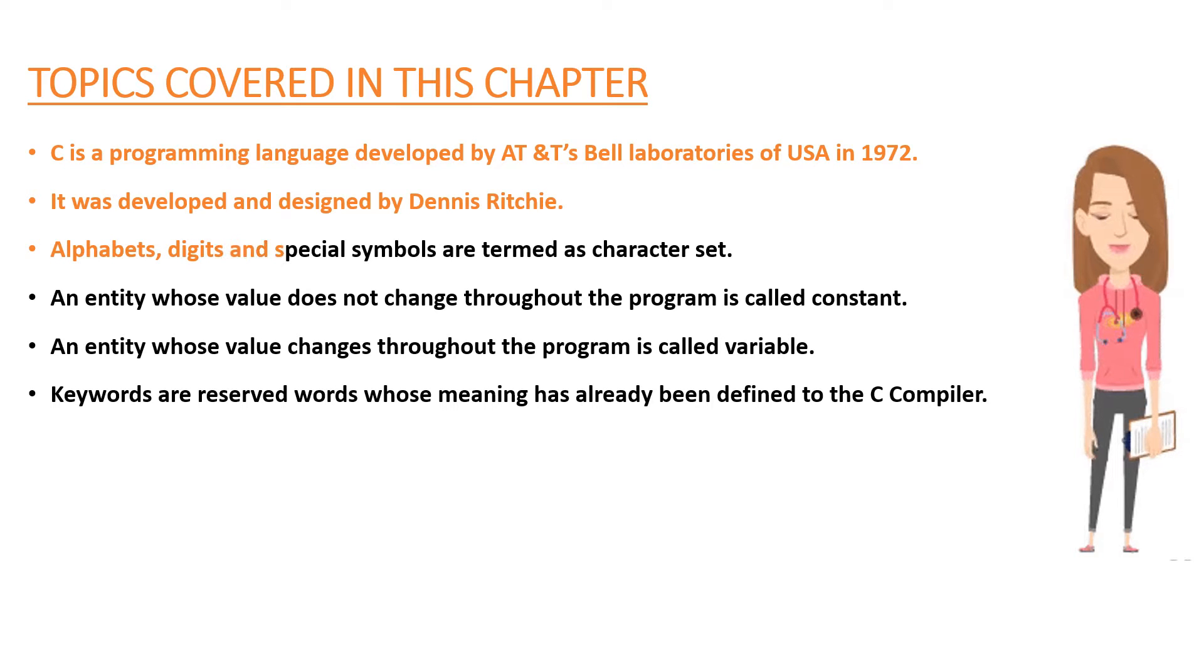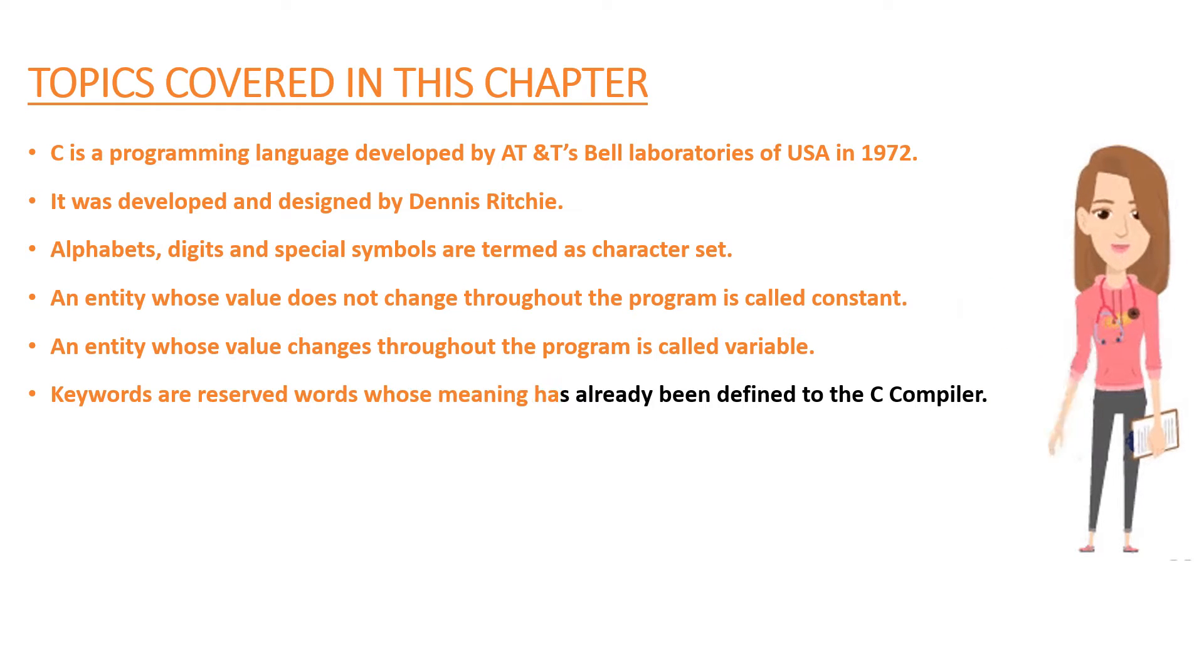Alphabets, digits and special symbols are termed as character set. An entity whose value does not change throughout the program is called constant. An entity whose value changes throughout the program is called variable. Keywords are reserved words whose meaning has already been defined to the C compiler.